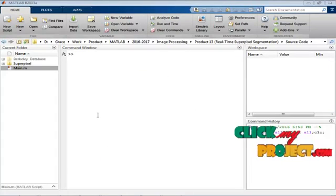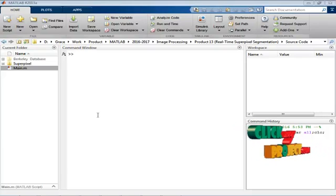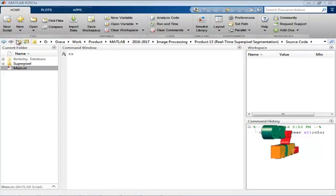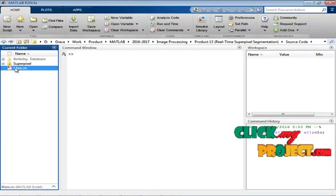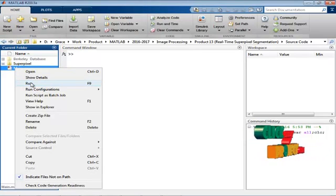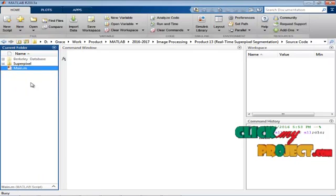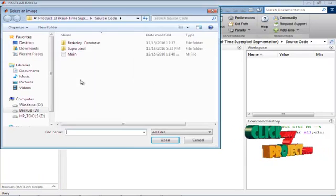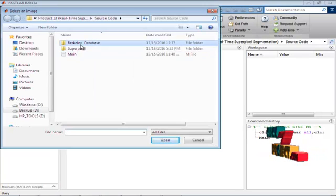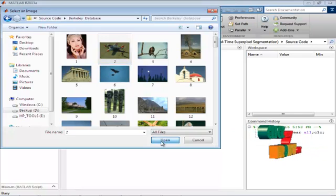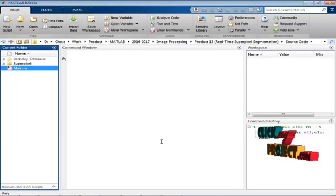Now we are going to discuss the output of our project. First, open the MATLAB tool, MATLAB R2013A is our tool name. Then open the current folder, select the main.m file, and right-click the file to run the project, click the run button. Now we are going to select one database image. I selected a 2.jpg file. Now run the project.